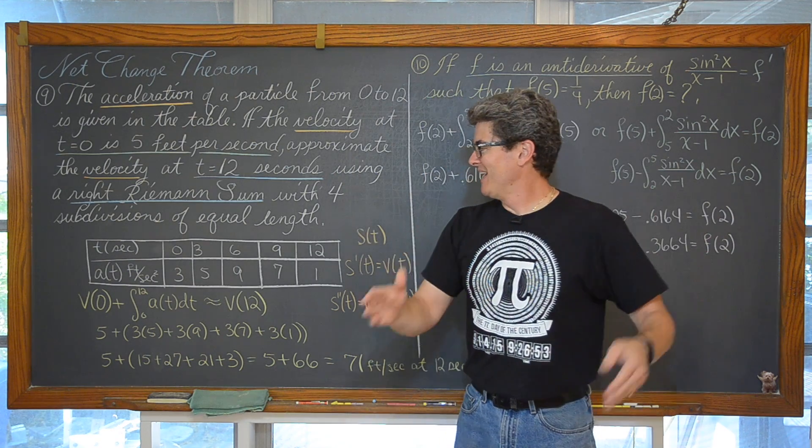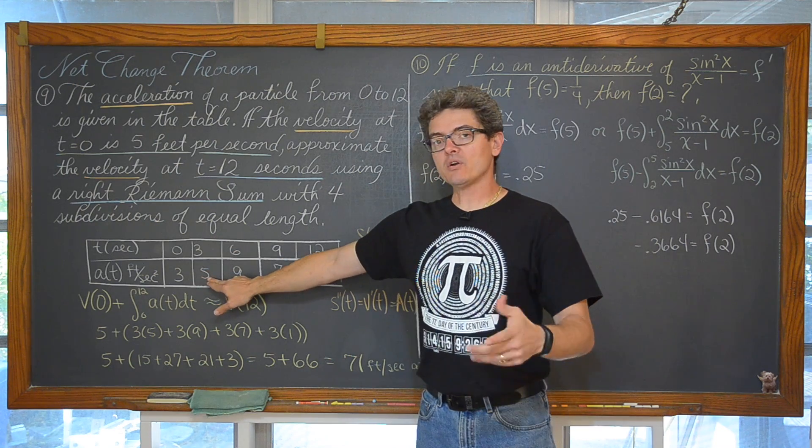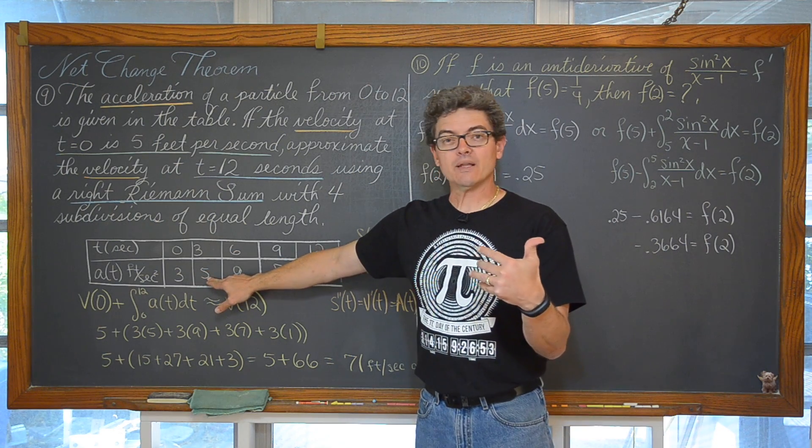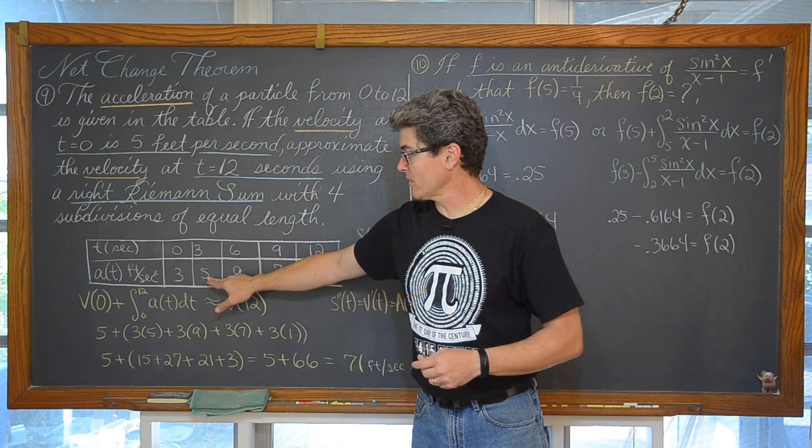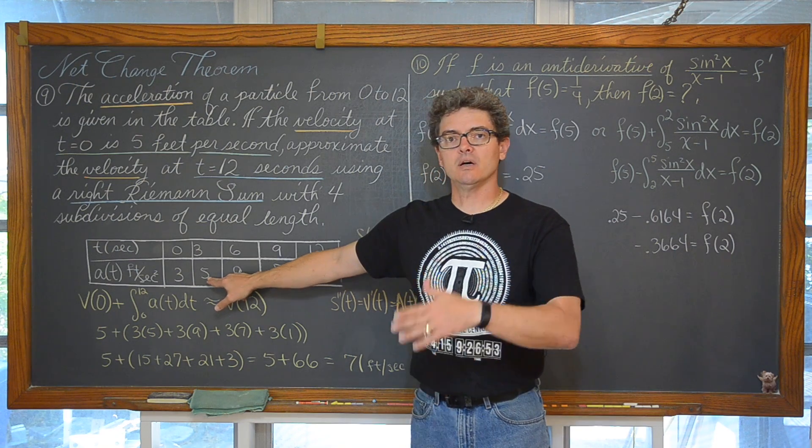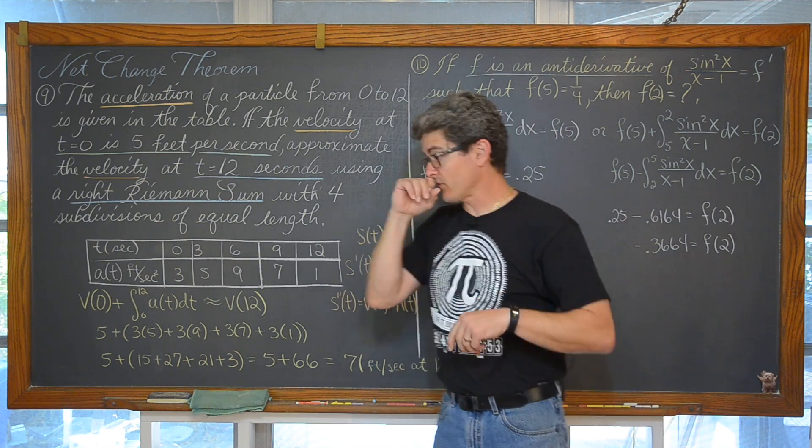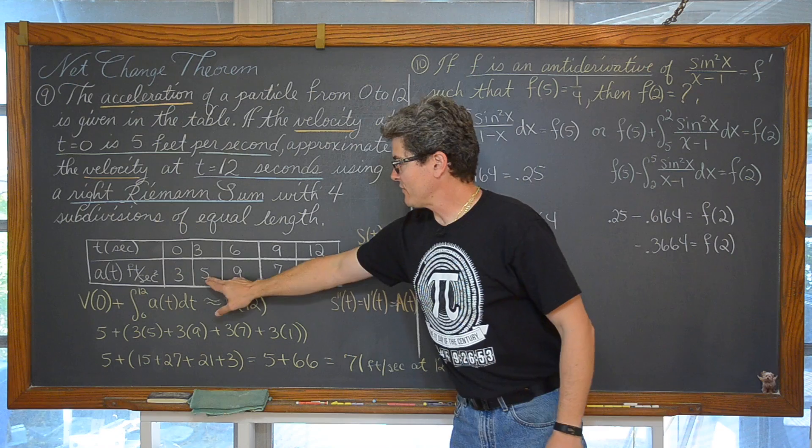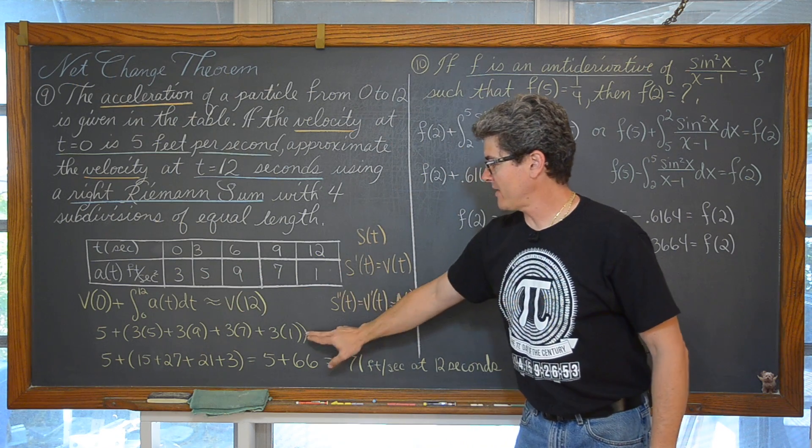But start going through there and move before you look for that acceleration value or the right side of that rectangle for the right Riemann sum. So we have the 5, 9, 7 and then finally the 1.